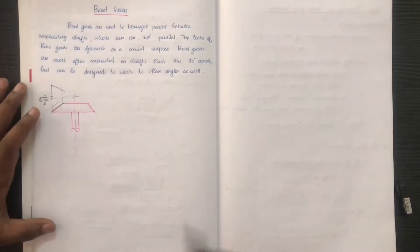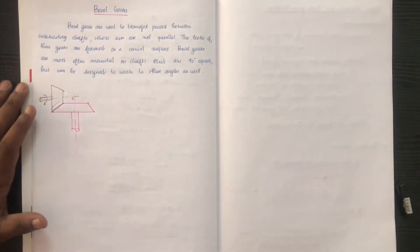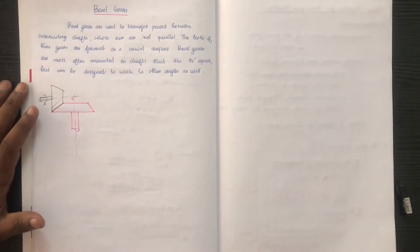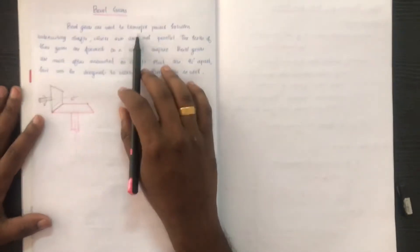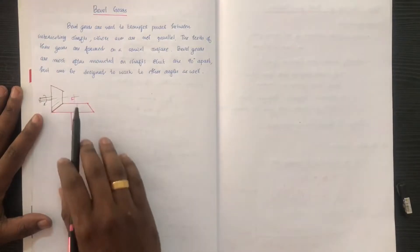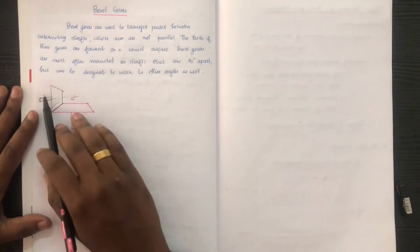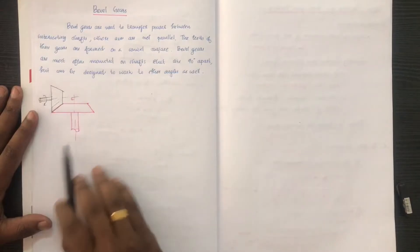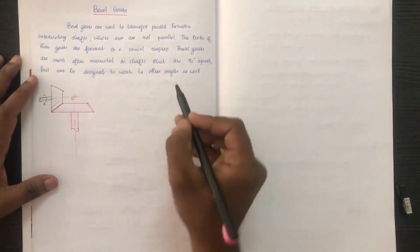It can transmit power at a 90-degree angle. It is used to transfer power between intersecting shafts. It can be attached at a 90-degree angle.